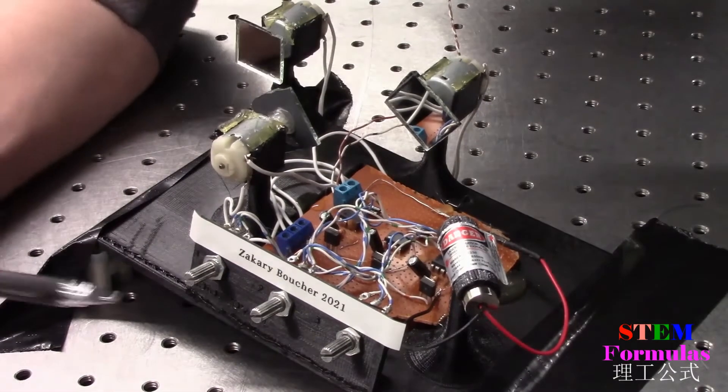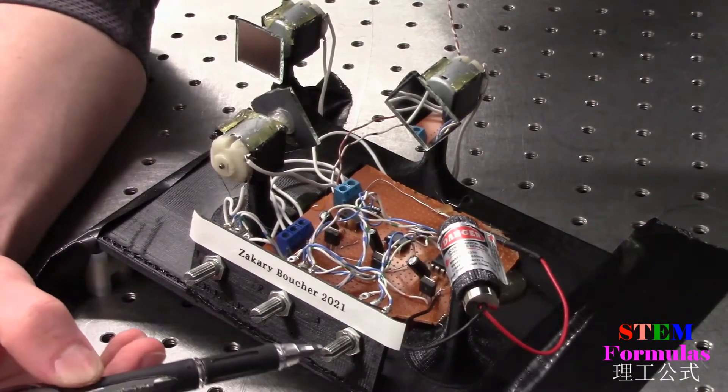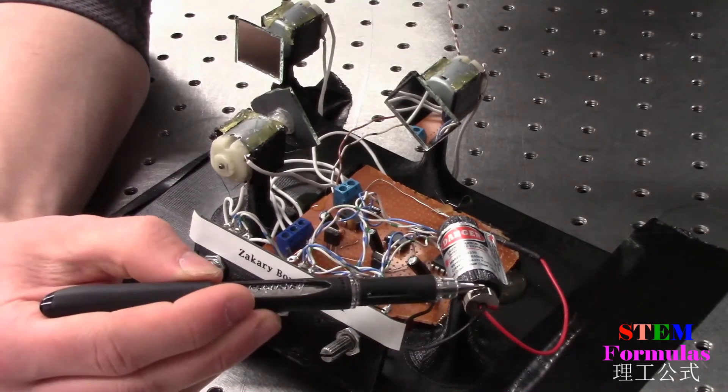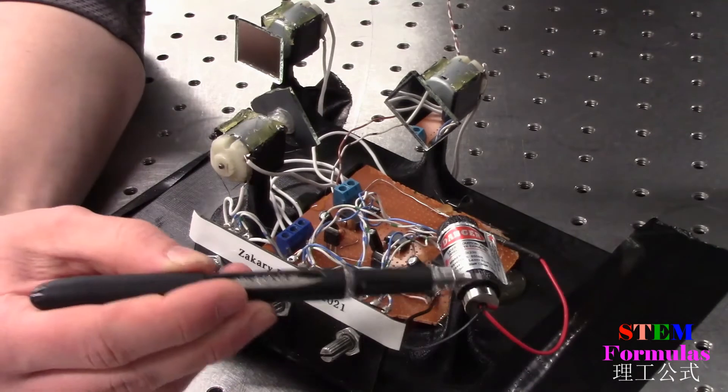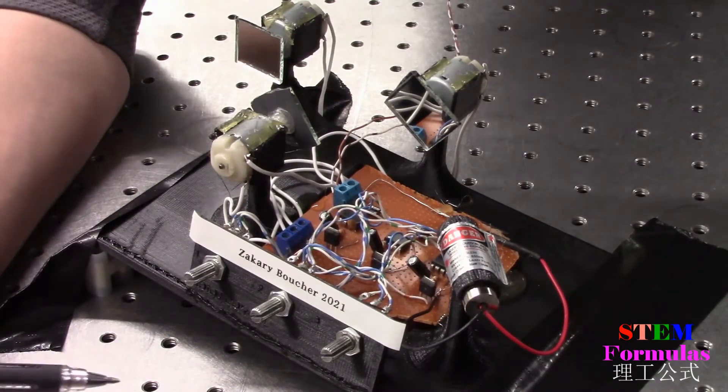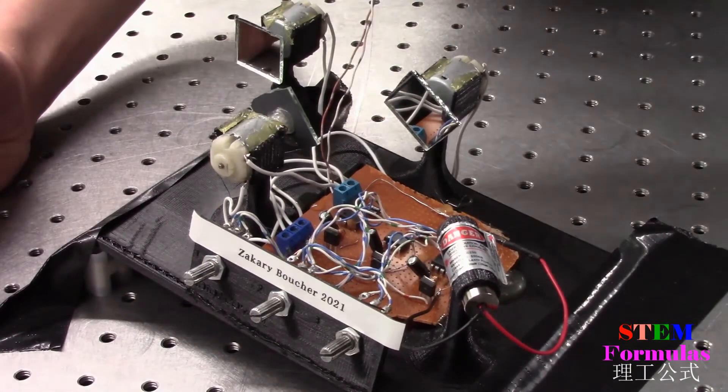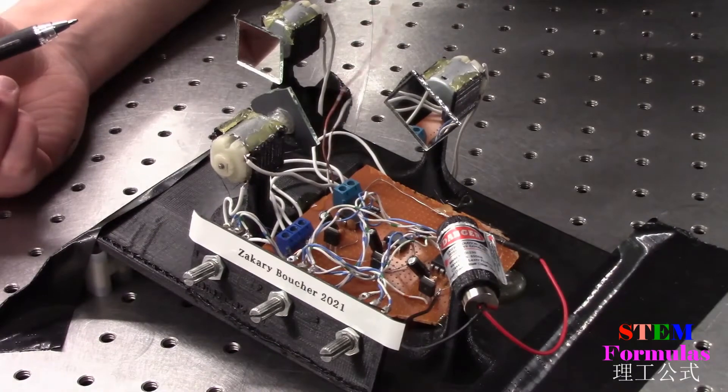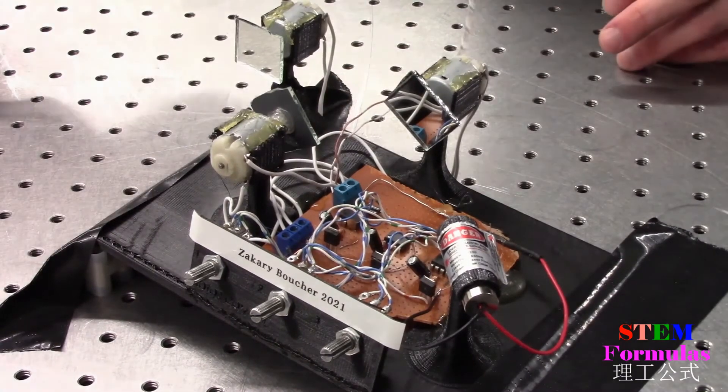Here you've got the three potentiometers to control each motor individually, and here you've got the monochromatic light, which is just a red light. So you hook it all up to 5 volts and your ground, and let's see it in action.